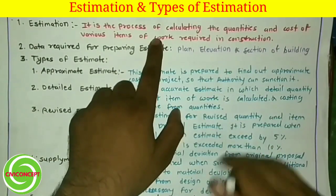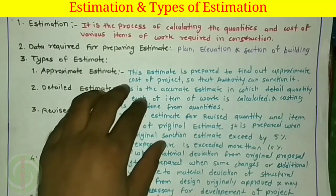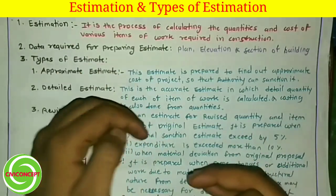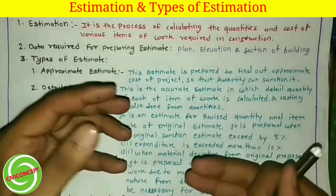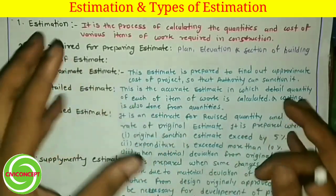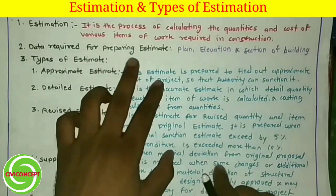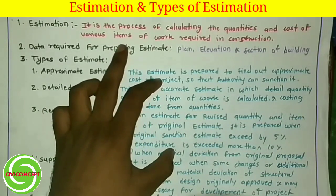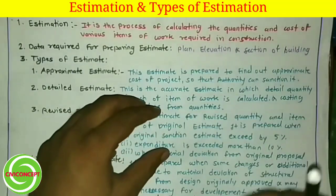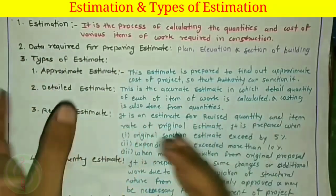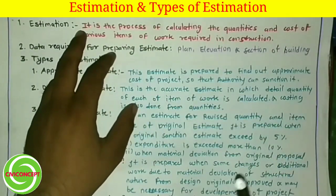What is an item of work? For example, if you are doing concreting in the foundation, that is one item of work. Brick masonry in the superstructure is another item of work. Plaster work is also an item of work. So the quantity of each item of work we have to calculate before starting any construction project, and we also need to calculate the cost of those quantities.